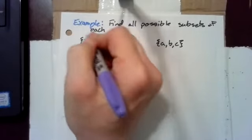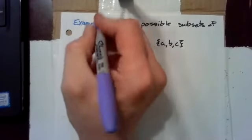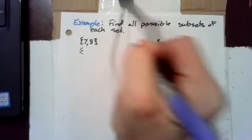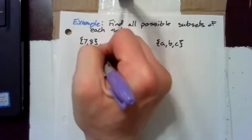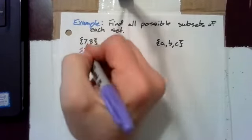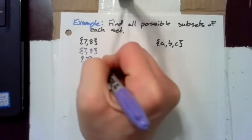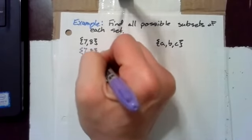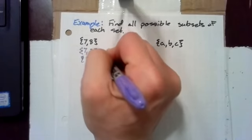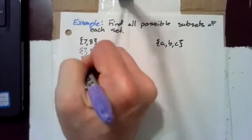So, we have the set 7, 8, and of course, this is a subset of itself. Every set is a subset of itself. In addition, it has the subset 7, the subset that contains only 7, and as another subset, we've got the set that contains only 8, and of course, we have the empty set.